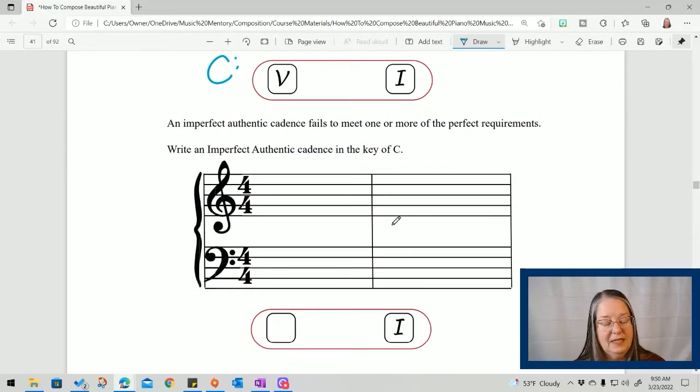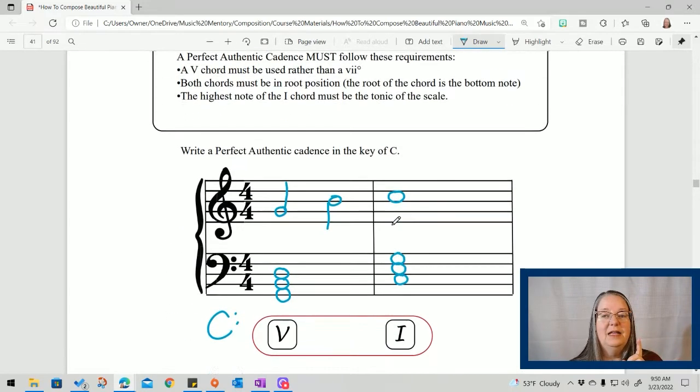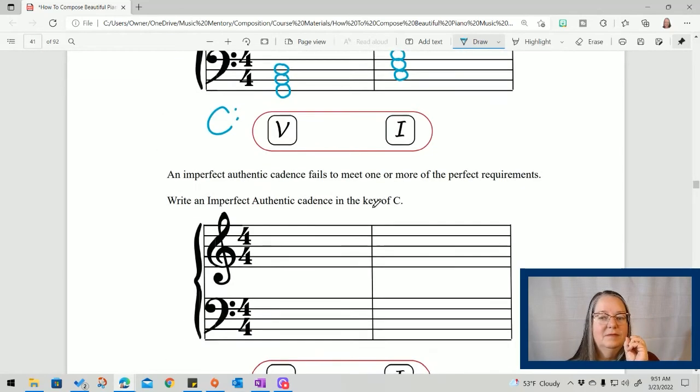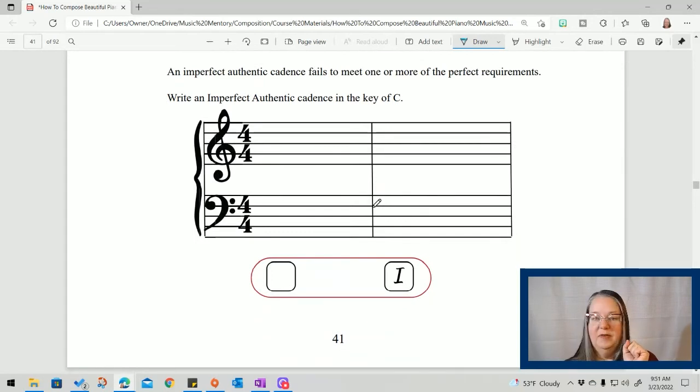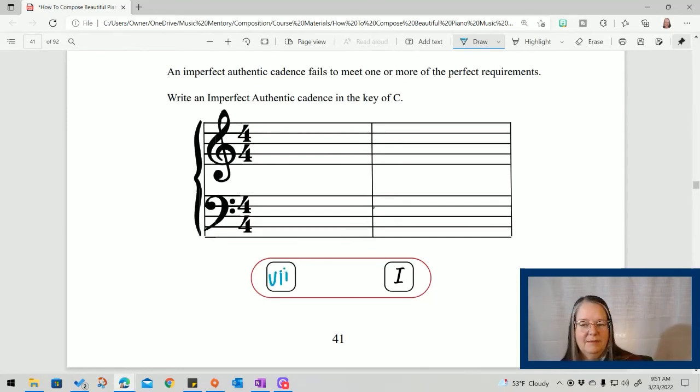Okay. Now an imperfect authentic cadence just has to violate one of those rules. It can do the other two, but it can't do all three. So if it doesn't do one of them, it's not perfect. It's imperfect. So we're going to write an imperfect authentic cadence. How about let's break all three. We're going to go with a seven right there. Makes it not a perfect cadence. We're not going to be in root position. So if we're in the key of C, this is way back to unit one where we have all the chords.